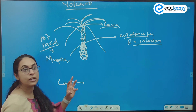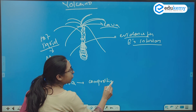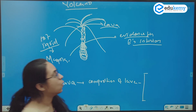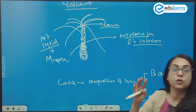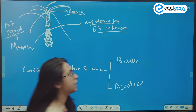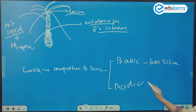On the basis of the composition of the lava, it can be of two types. One is the basic lava and the other is the acidic lava. Basic lava is one which has less silica in it, whereas acidic lava is the one which has got more silica in it.